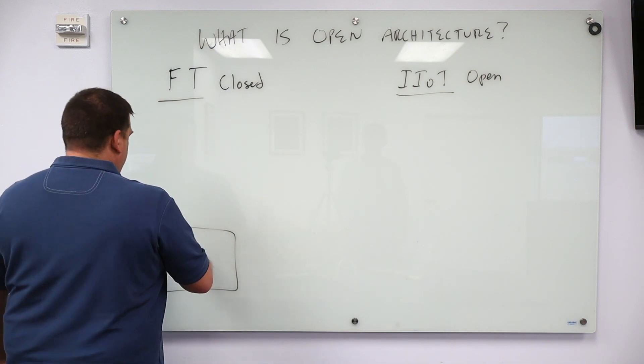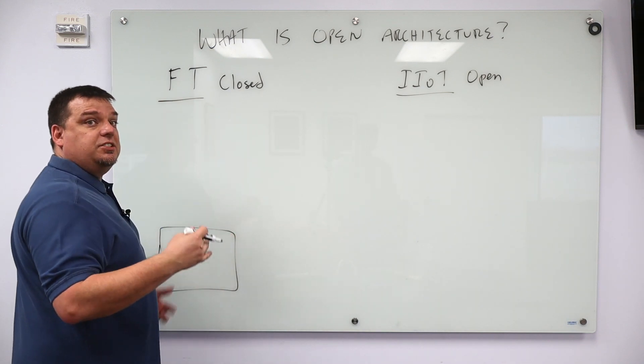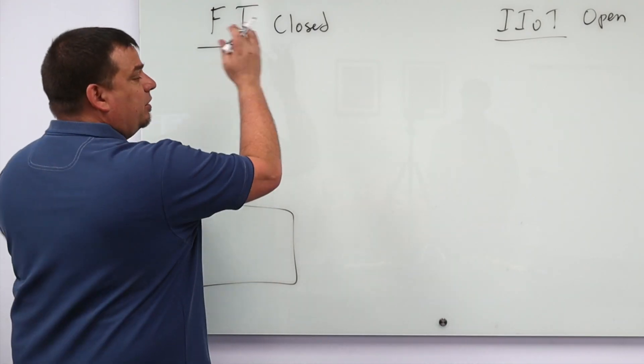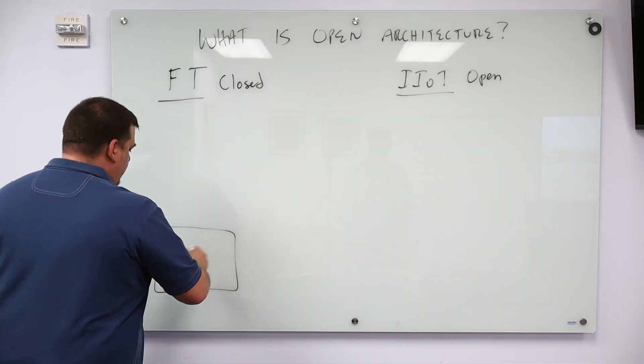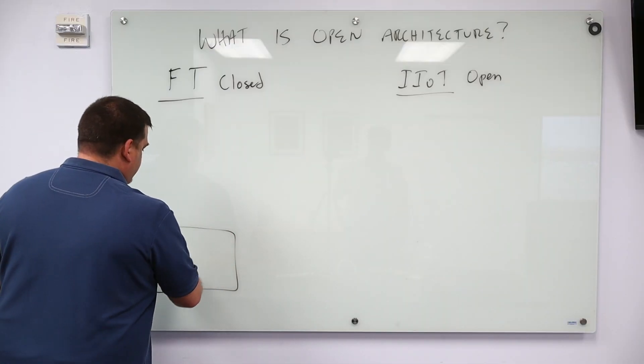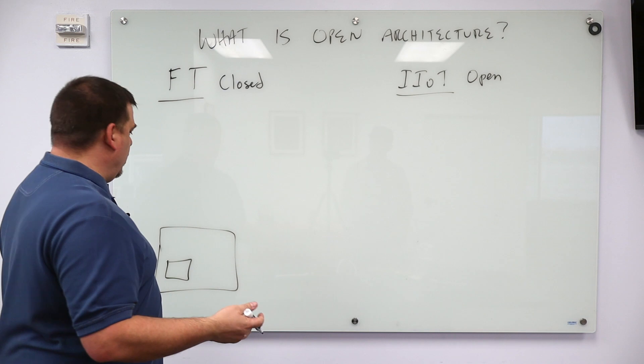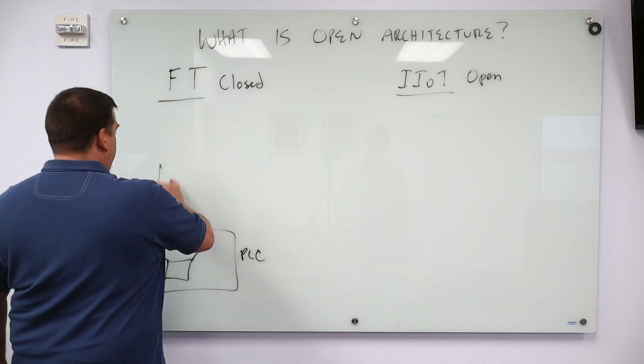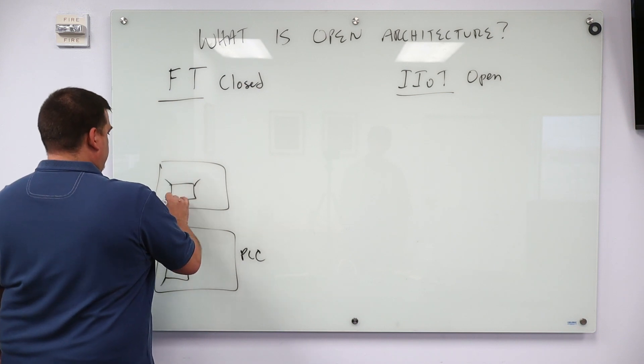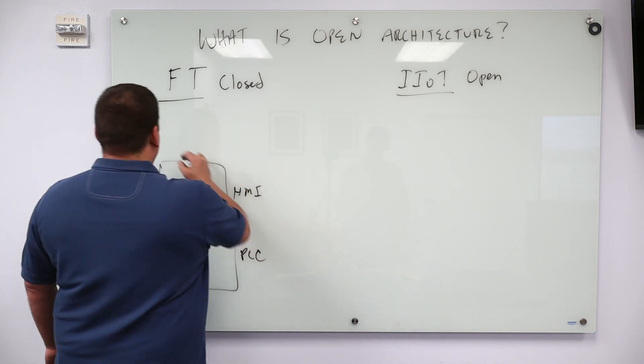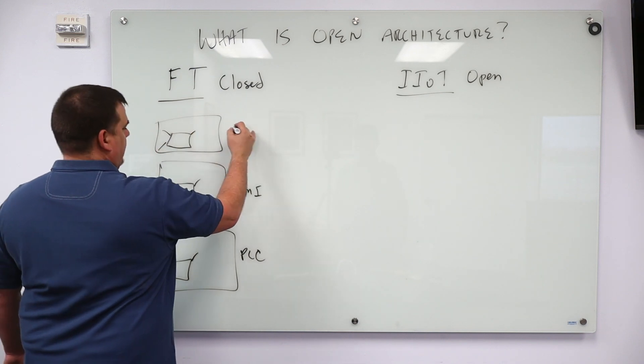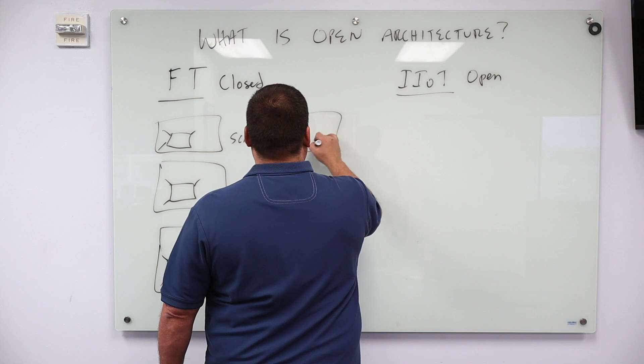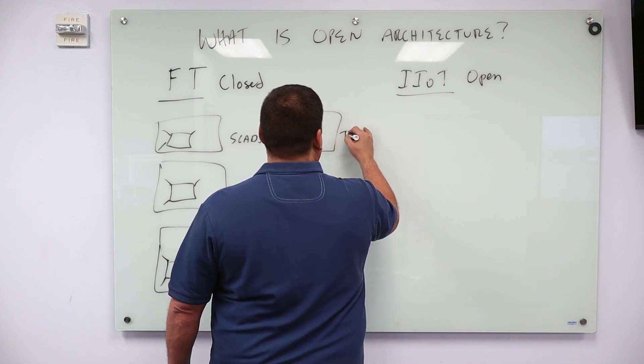Let's use PlantPAX and FactoryTalk Analytics for Machines as a perfect example of closed architecture solutions. What is PAX? PAX is basically Rockwell's development group creating objects that run inside of their PLC that map to an object in their HMI, that maps to an object in SCADA, that maps to an object in FactoryTalk Analytics.